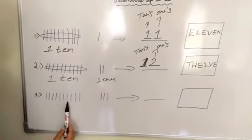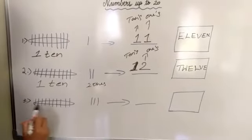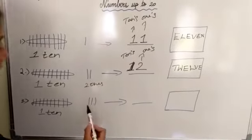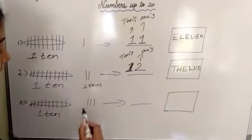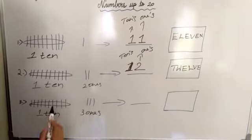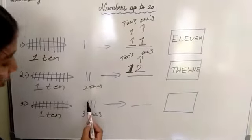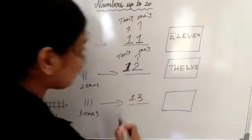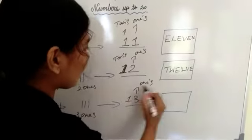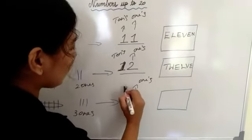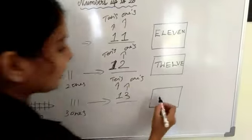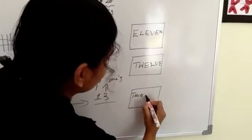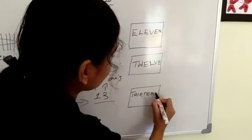Count 1, 2, 3, 4, 5, 6, 7, 8, 9, 10 and make it as a group. We will get 1 ten, and how many sticks are left? 1, 2, 3 — which means 3 ones. So 10, 11, 12, 13: we will get the number 13. And 3 is in the ones place and 1 is in the tens place. Write the number name: 13, T-H-I-R-T-E-E-N.